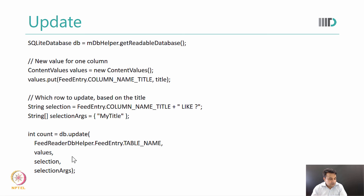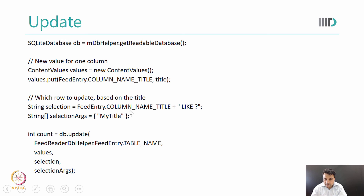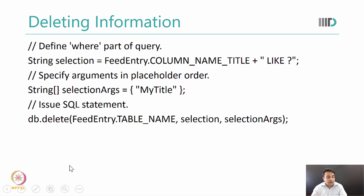Updating a SQLite database is also very easy. We get our database instance and create new values for the column we want to update — similar to how we created values when writing. We do a value put, and then define the selection criteria specifying which column we want to update. We define a selection criteria and selection arguments, then call db.update giving the table name, the values to update, and the columns to update based on the criteria.